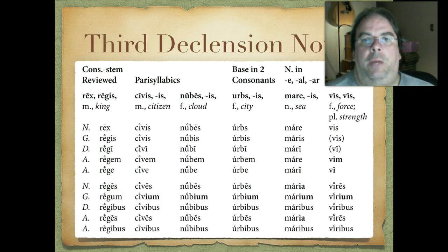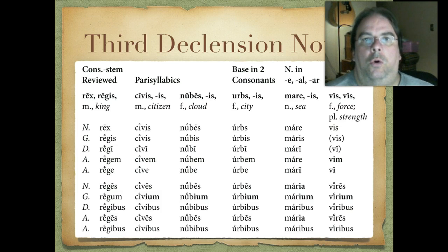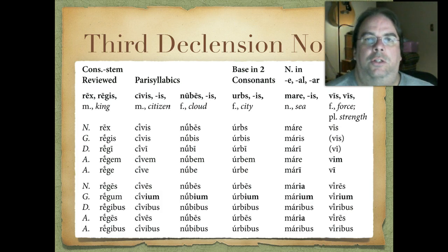The next type are the base in two consonants. Just like the name says, when you take off the genitive ending, you get two consonants at the end of the base form. Like urbs, urbis — declining: urbs, urbis, urbi, urbem, urbe. Then the plural: urbes, urbium — there's that I-U-M again — urbibus, urbes, urbibus. Not much different. Third declensions, whether consonant or I-stem, look fairly similar. Just a couple of extra endings to memorize.